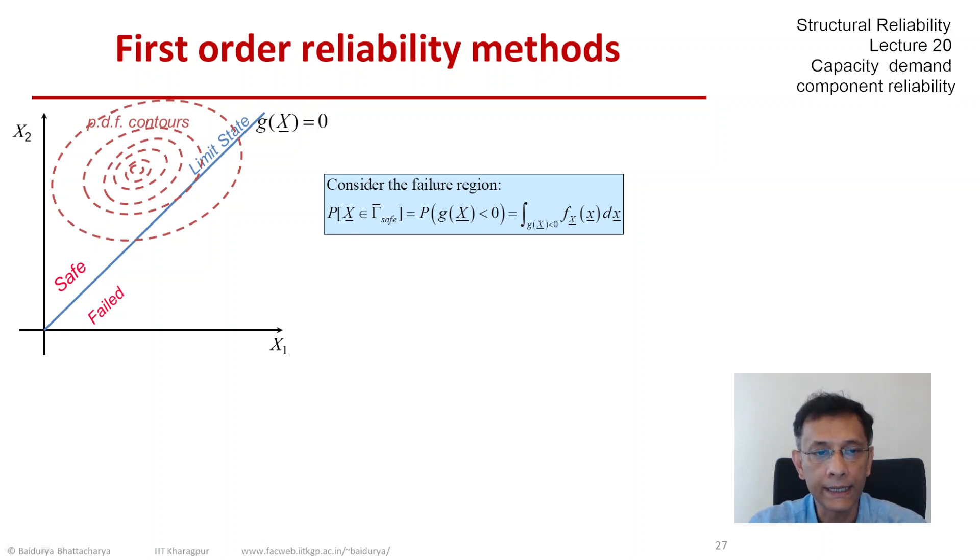This is what we are interested in. In general, X is an N dimensional vector. Now obviously we have discussed this. G does not have to be a linear function of the X's.